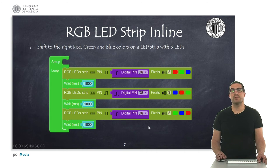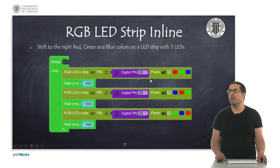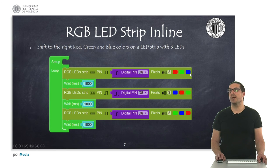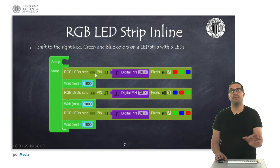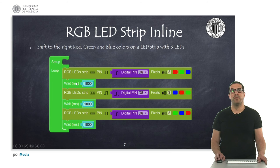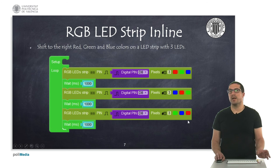Finally, in this third example, what I have is the inline LED strip instruction, in which I specify the pin number and then the number of LEDs I have. As I said before, it will modify the instruction so I will have three fields here, and I can set individually the colors for each field. In this example, what I'm doing is an effect of shifting the colors: I put red on the first position, wait for one second, then shift the colors to the right, and then shift the colors to the right again.